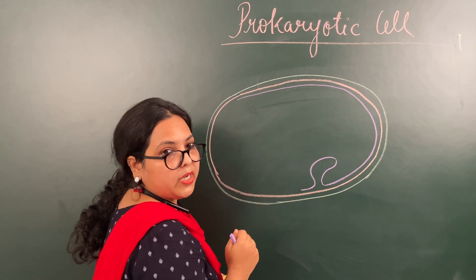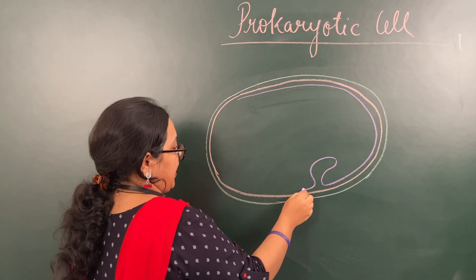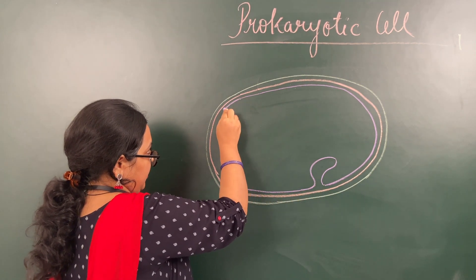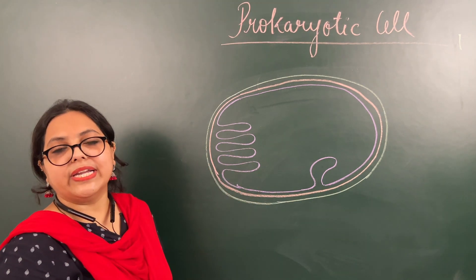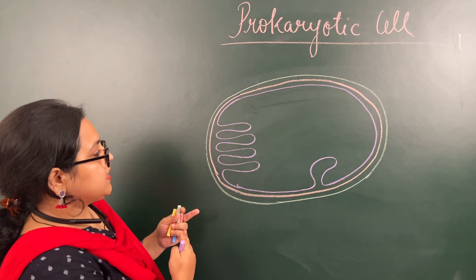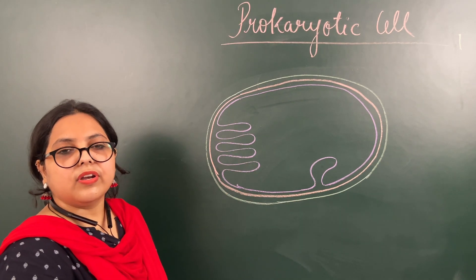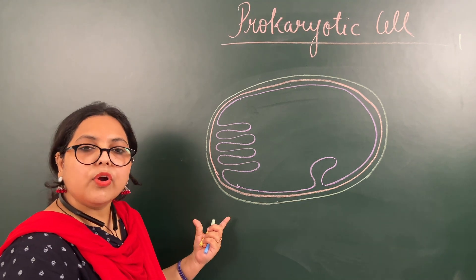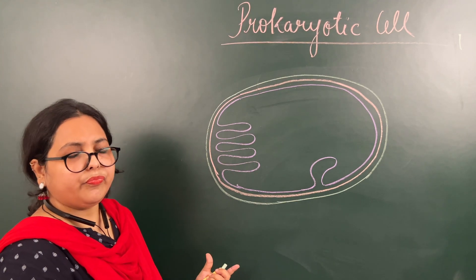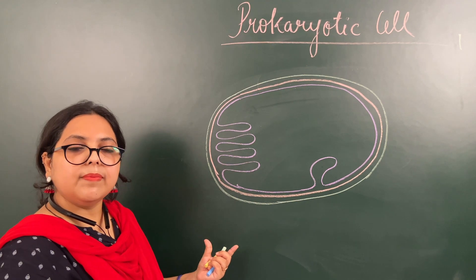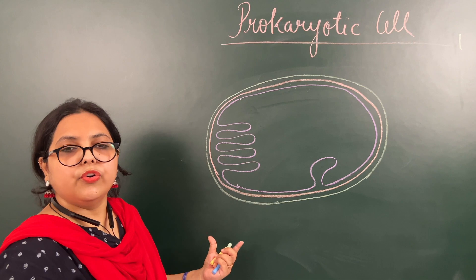The plasma membrane folds inward to increase the surface area, and this infolding is known as the mesozome. 'Zone' means body and 'meso' means middle, so it is a middle body formed by the plasma membrane. The plasma membrane continues and makes several layers called thylakoids. This structure is present in cyanobacteria — bacteria which can perform photosynthesis.